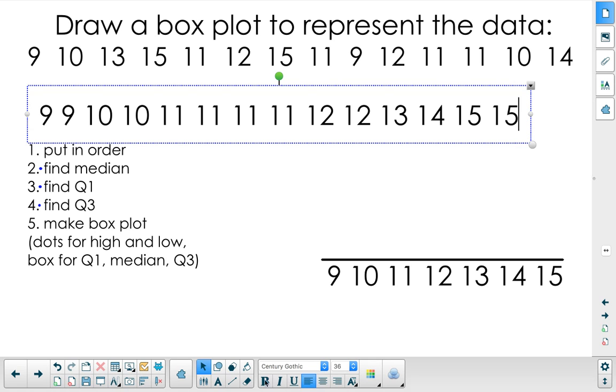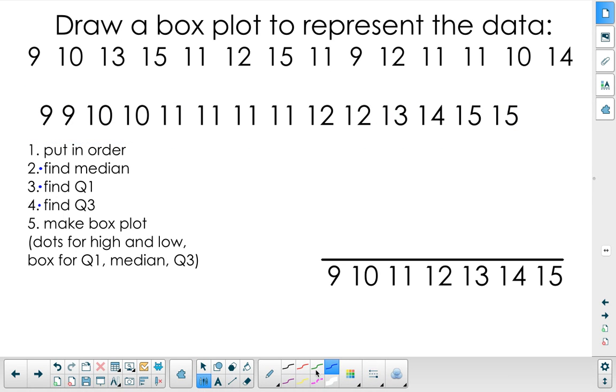There's the first step. Now we're going to look for our median. We're going to match each one up, and I'm left with 2 11s in the middle. So that means my median is 11. I'm going to mark my median there.